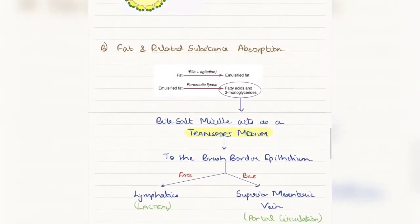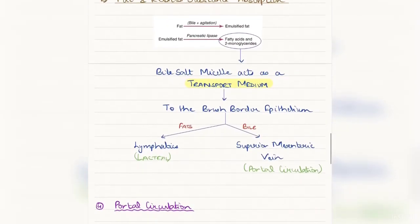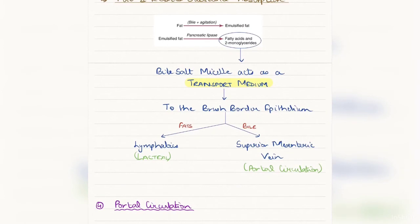So next, coming to the absorption. Fat which has been emulsified gets acted upon by pancreatic lipase. This pancreatic lipase actually breaks the fat into fatty acids and monoglycerides. These bile salt micelles also act as a transport medium to carry these monoglycerides and free fatty acids, both of which would be otherwise relatively insoluble, to the brush borders of the intestinal epithelium.